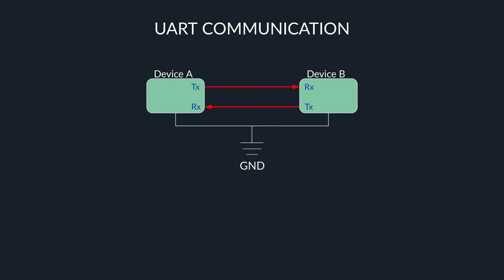Let's continue and try to understand how UART communication works. UART is a serial communication protocol between two devices. Device A, which is us, wants to speak to device B, which is our target. So we need a connection from our transmission line TX to a receiver line RX on the target, and the same goes in the opposite direction — the target sends on its TX and the data ends up on our RX. Both devices also have to be grounded.